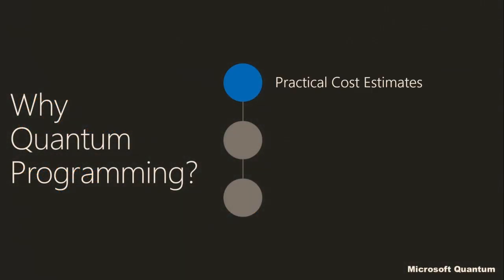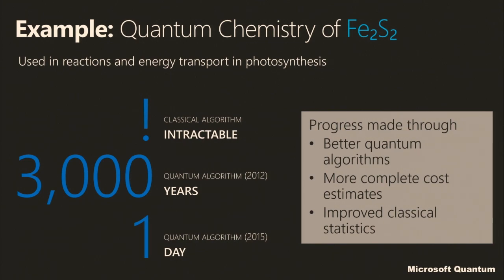Quantum programming — that's what it's all about. We want to develop algorithms and run those algorithms, so we need a programming language. Here I'm going to talk about Q#. What I'll focus on today is using an implementation of an algorithm in Q# to count the number of gates and qubits necessary to run the algorithm, to get an understanding of when quantum computers come around, how long is this really going to take.